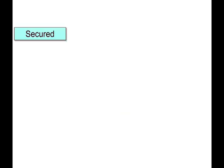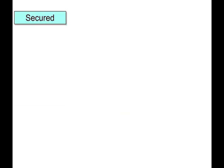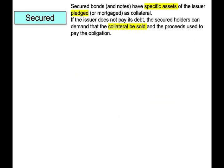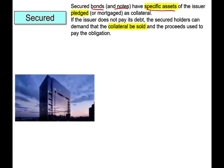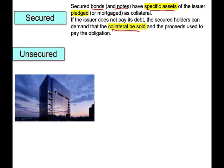The other topic we're going to look at today is the different types of bonds and notes. For example, we could have secured bonds or notes. Secured means the bond or note has a specific asset of the issuer pledged as a mortgage or collateral. So if you cannot pay back your loan, the company can sell your building — the building is the collateral. The bond is secured by a building.